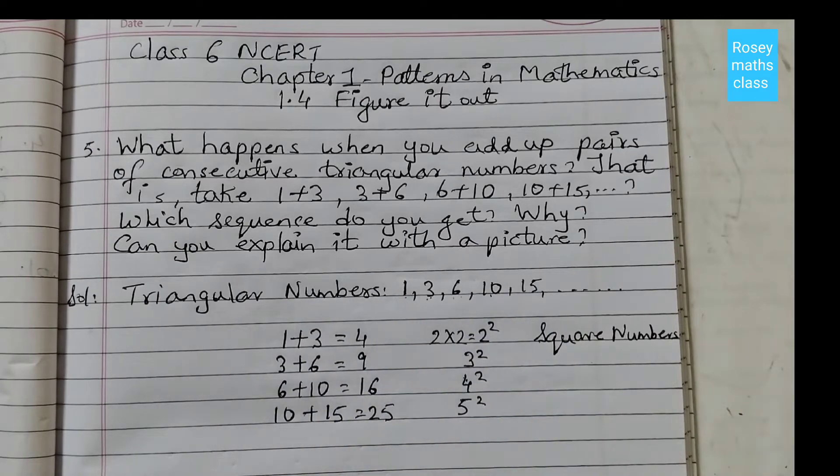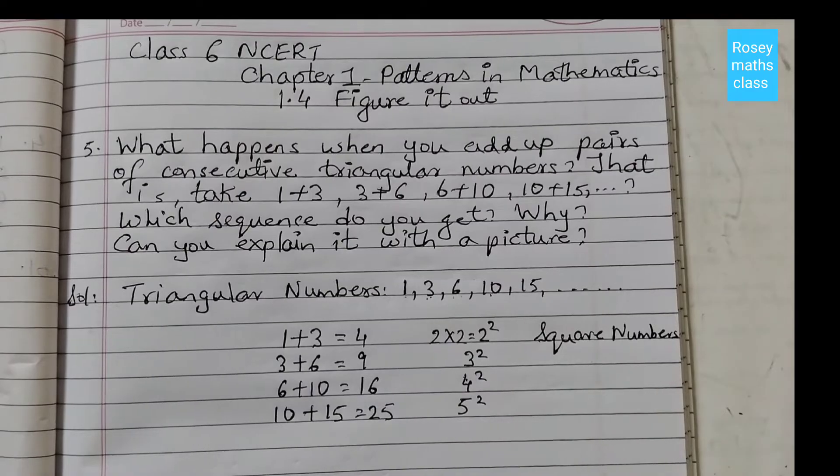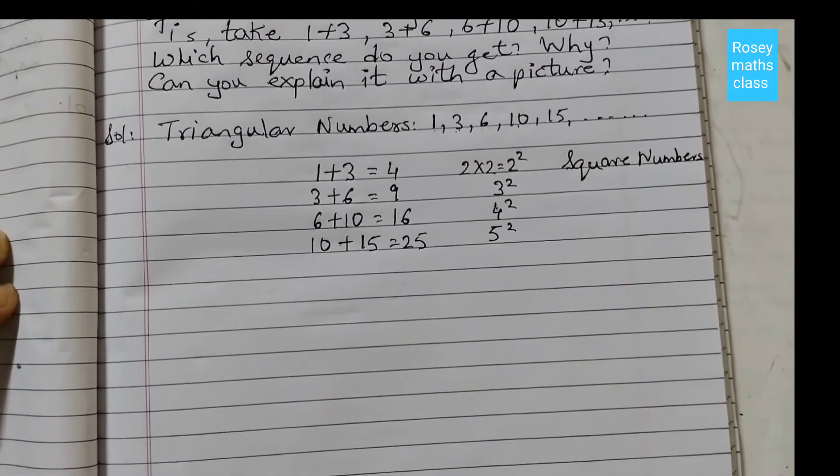Can you show this, why these numbers are square numbers when we are adding two consecutive triangular numbers? So we can use dot representation for that.